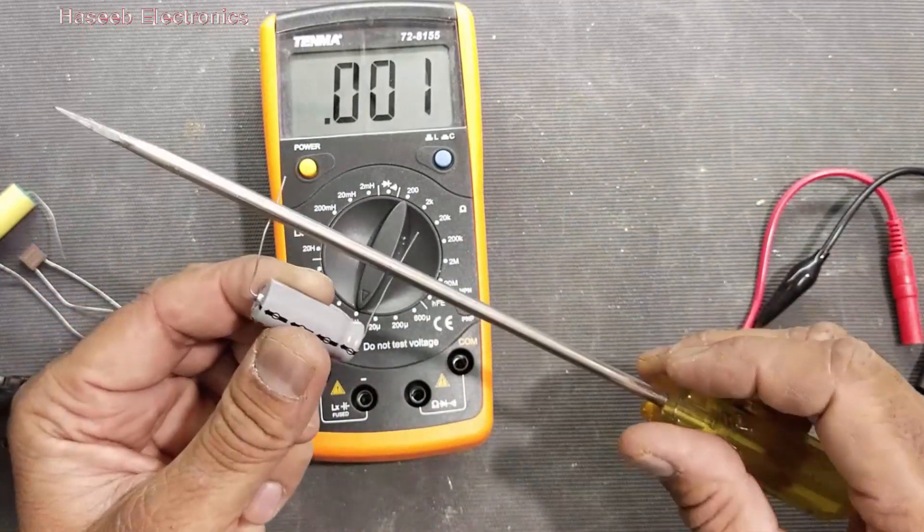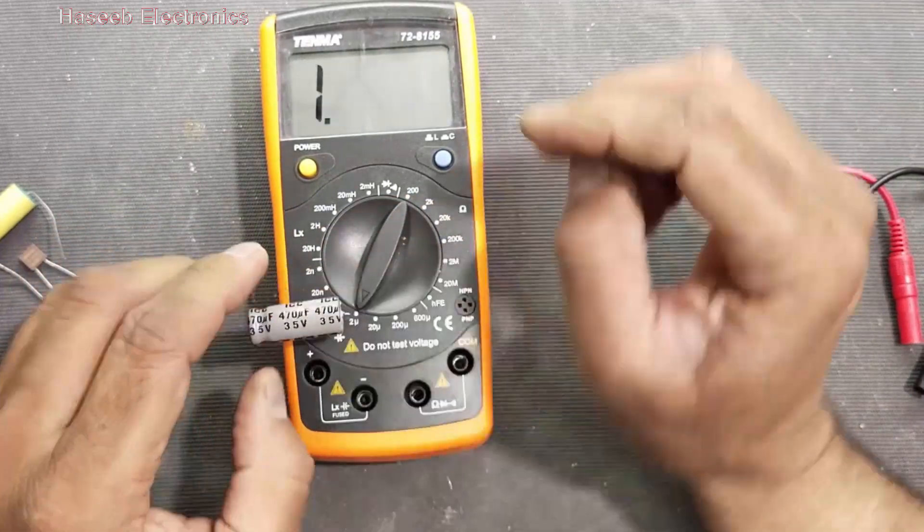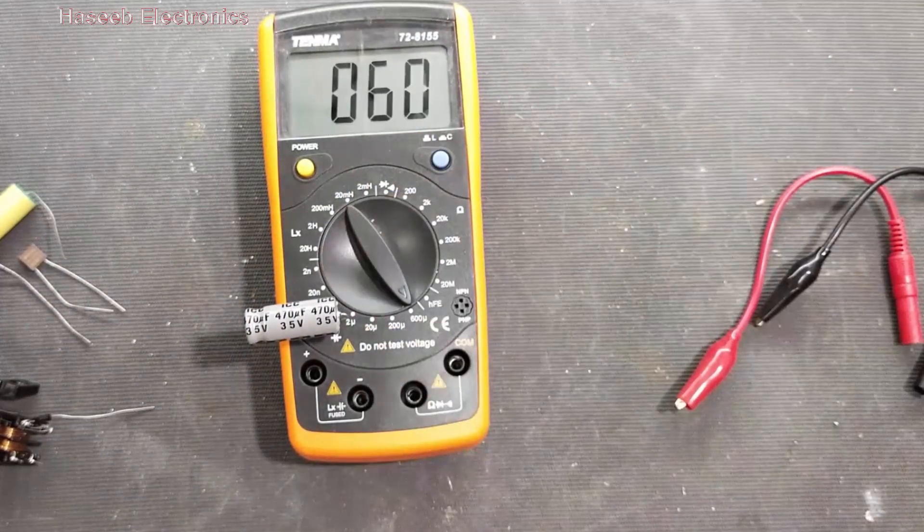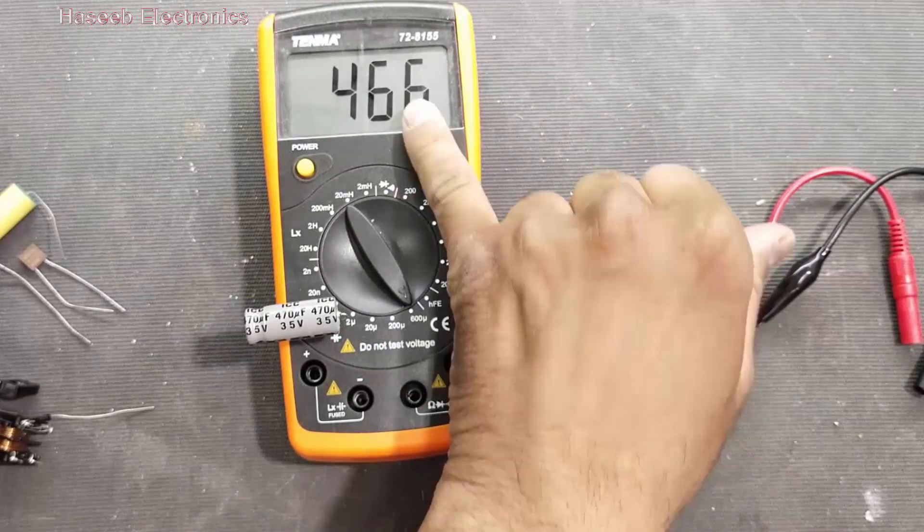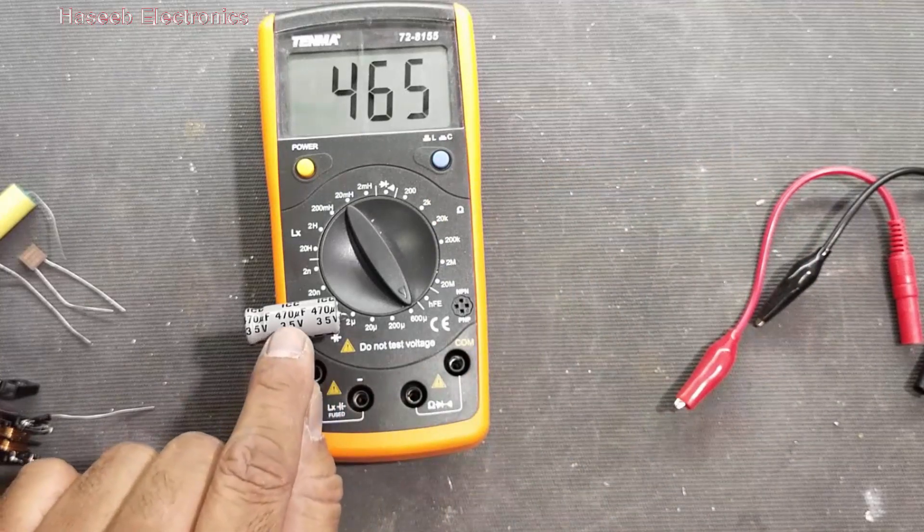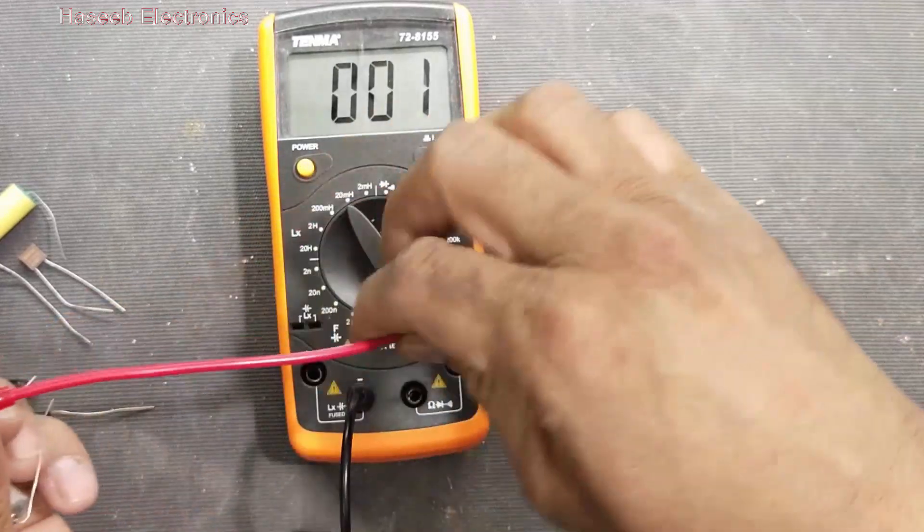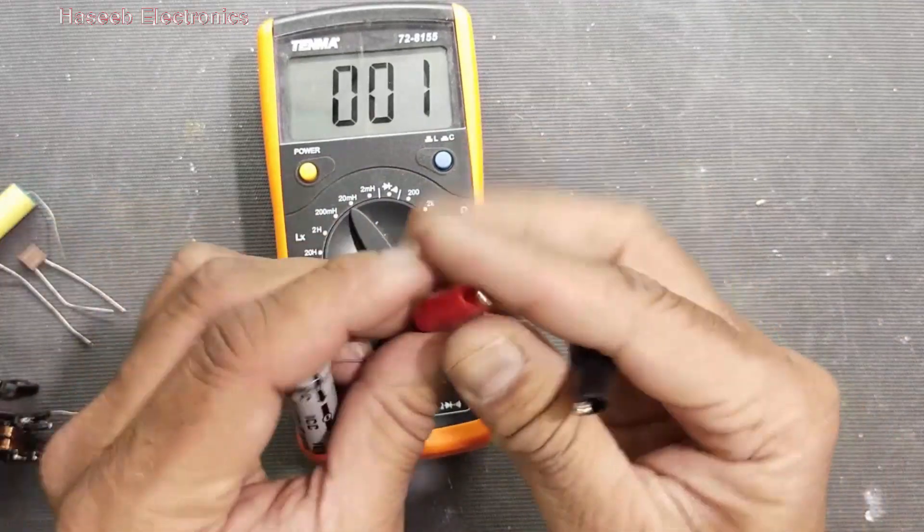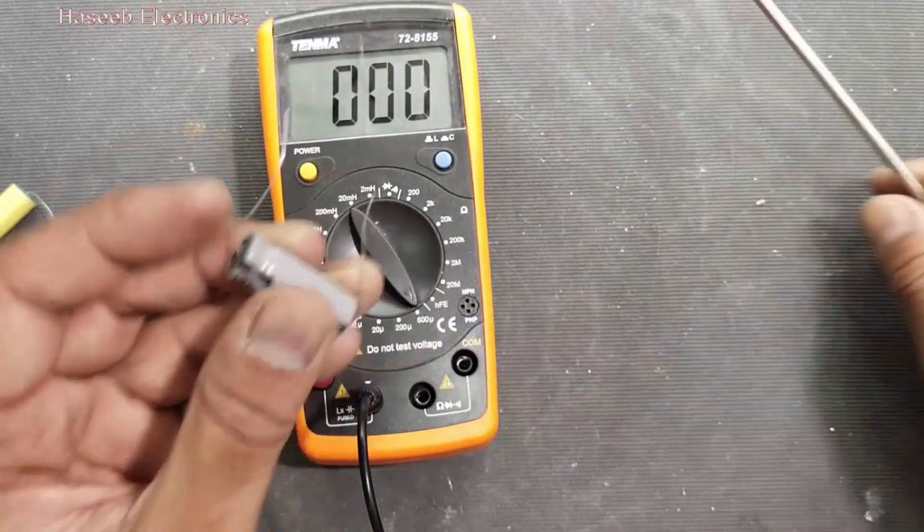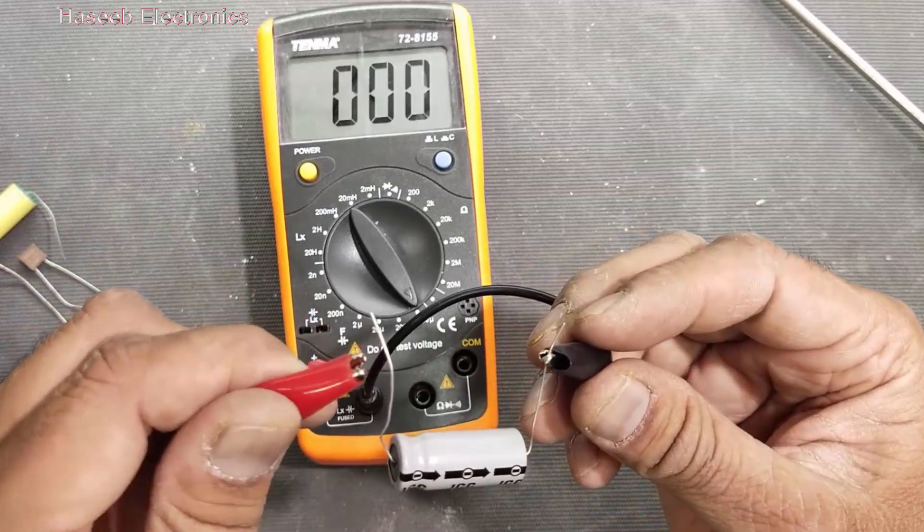Now we have another capacitor. Discharge these test leads. It is 467, 66, 68, 67, so it is 470 microfarad. So it is the perfect value. Or we can also use these test leads to test any capacitor, but the best method to test capacitor - test it outside, discharge the leads, negative to negative terminal, positive to positive terminal.